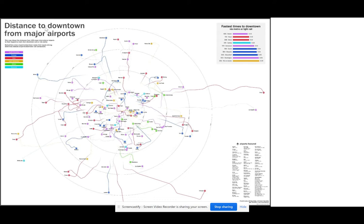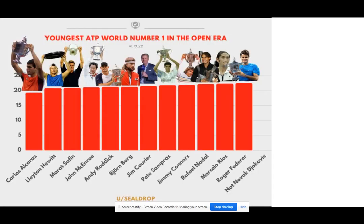Even though we know we're supposed to be getting distance from downtown to major airports, that doesn't tell us anything meaningful. And then finally, is anything actually different here? How is this meaningful? Hard to know.